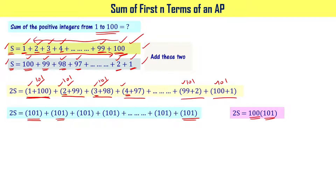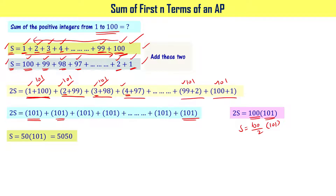2S equals 100 times 101, so S equals 100 divided by 2 times 101. That is 50 times 101, which equals 5050. Therefore, the sum of the positive integers from 1 to 100 is 5050.